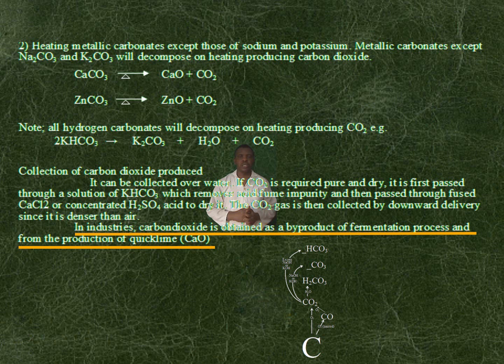In industries, carbon dioxide is obtained as a byproduct of the fermentation process and from the production of quicklime, that is, calcium oxide.